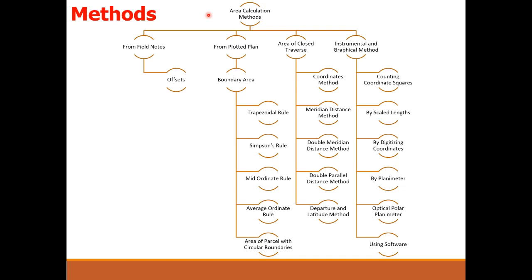There are a number of methods by which you can easily calculate the area of a given scheme. Which method is used depends upon many factors. According to the given site conditions, you will decide which method should be deployed. The first main category is calculating the area using field notes. Then from plotted plans, area of closed traverse, and instrumental and graphical methods. From the field notes, there is an offset method to calculate the area of a given survey scheme, which we have already discussed in the second or third lecture.